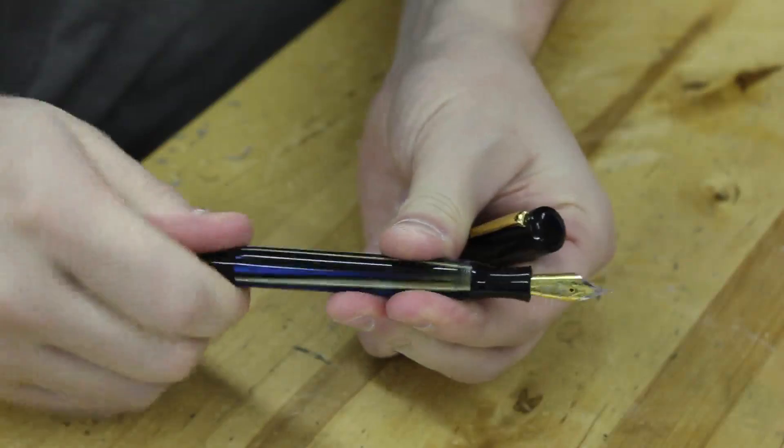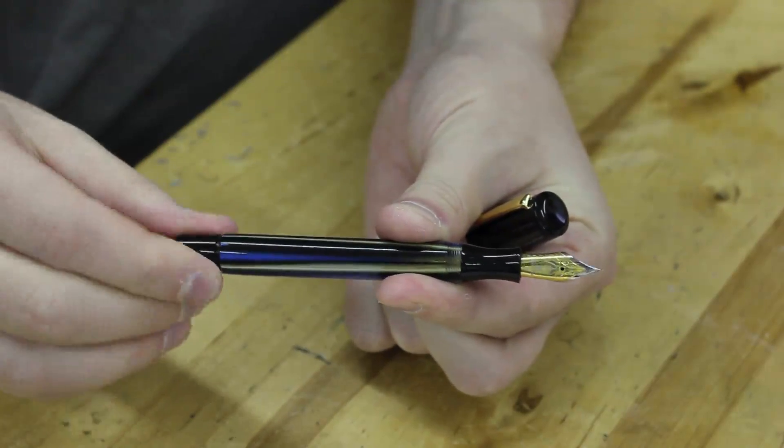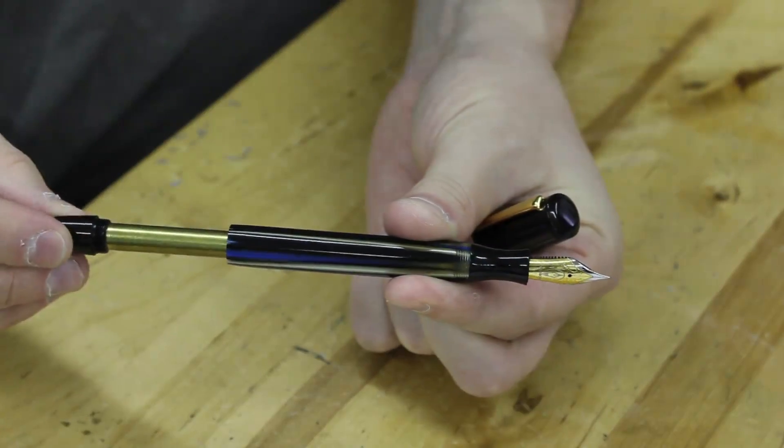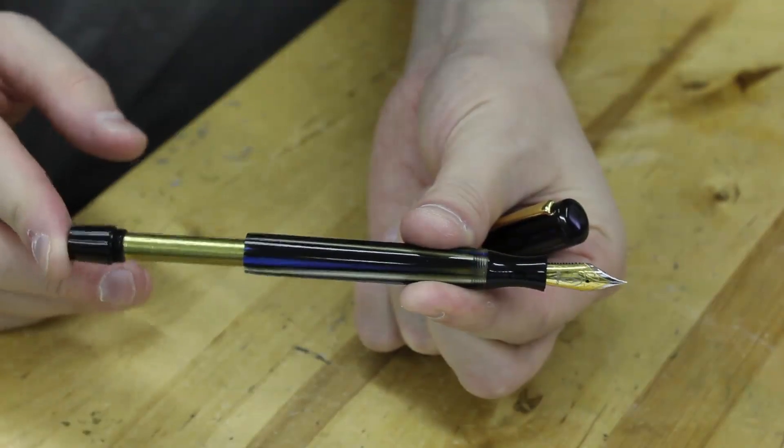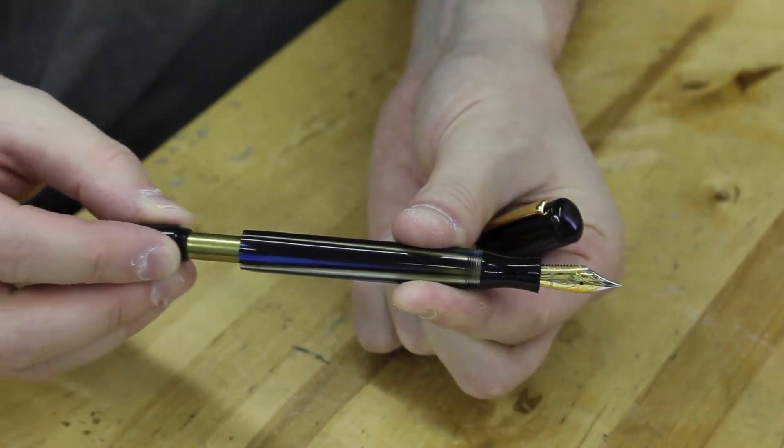I'll get a little bit more into the back story, but this is the Beaumont as a pneumatic filler. I'll just show you, there's a blind cap here that unscrews to pull out the pneumatic mechanism. Now I'll explain the whole filling system in a little bit.